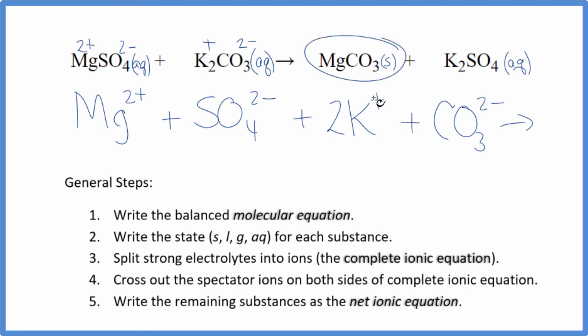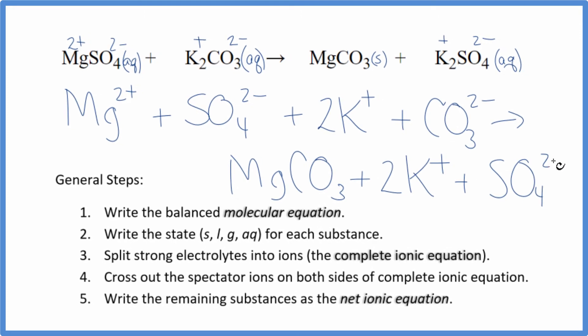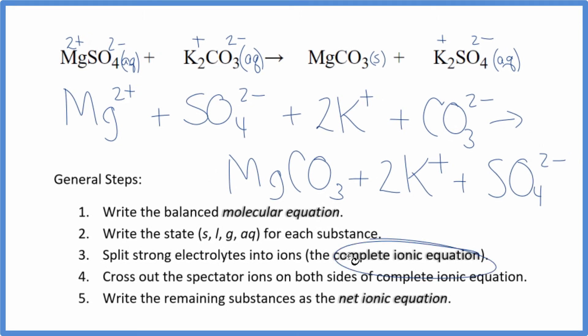For the product, we don't split solids up in net ionic equations. So we just write MgCO3, and then we had 2 plus and 2 minus, so 2 potassium ions again, and the sulfate ion. So this is our complete ionic equation.